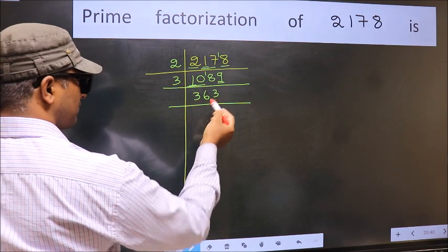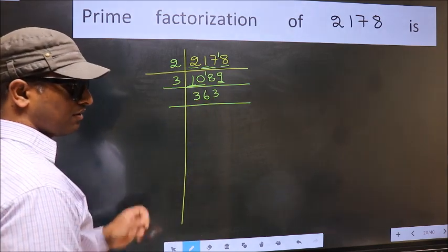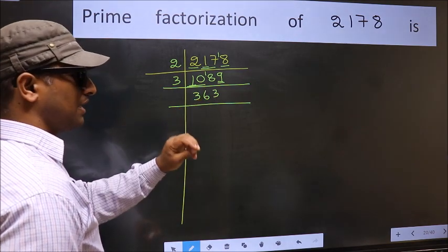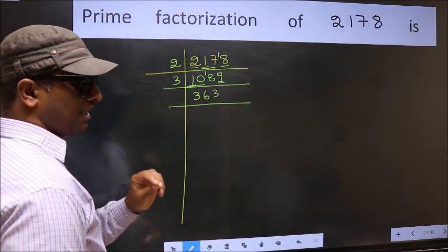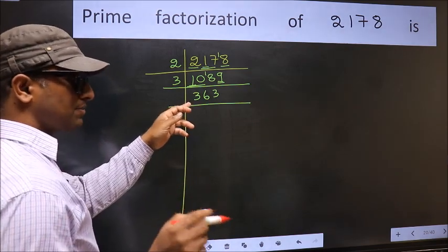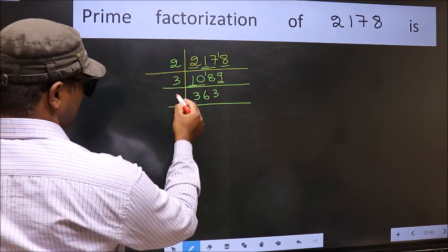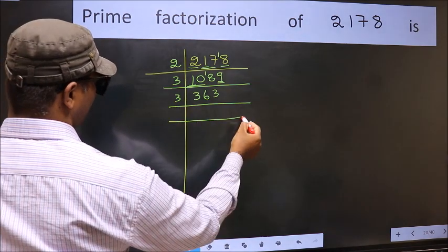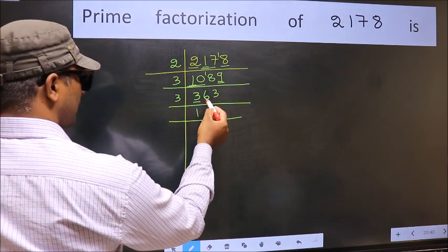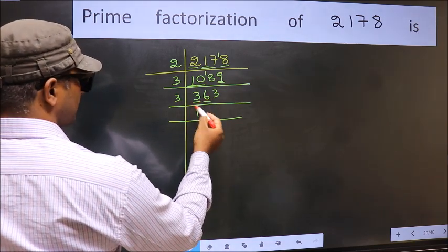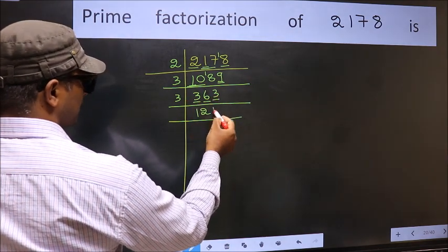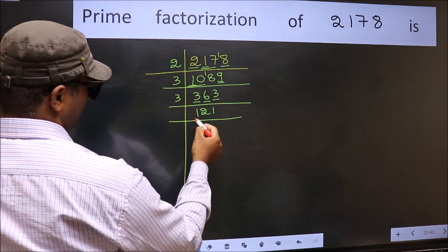Now to check whether this is divisible by 3 or not. For that, add the digits. 3 plus 6 plus 3 equal to 12. And 12 is divisible by 3. So, this number also divisible by 3. So, take 3 here. First number 3, when do we get 3 in 3 table? 3 wants 3. The other number 6, when do we get 6 in 3 table? 3, 2, 6. The other number 3, when do we get 3 in 3 table? 3 wants 3.